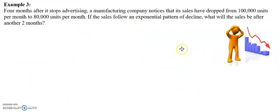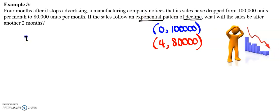All right. So let's talk about story problems a little bit. We're going to do the same thing that we just did. I'm going to help you pull out the important information and then see if you can write the equation finding your C and your k. So it says that four months after it stops advertising, a manufacturing company notices that its sales have dropped from $100,000. So we started with $100,000 in sales. And after four months, we are down to $80,000.